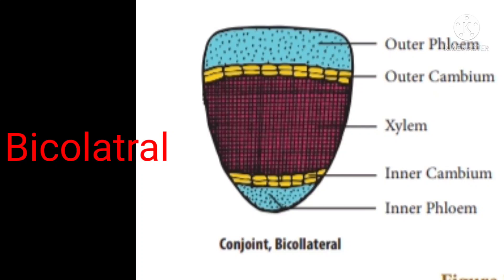Looking at the picture for bicollateral: blue is phloem on both outer and inner sides, brown is xylem in the center. There are two cambia — an outer cambium and an inner cambium. Phloem on both the inner and outer sides of xylem is called a bicollateral conjoint vascular bundle.